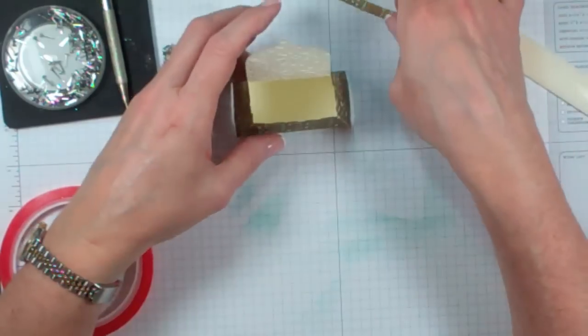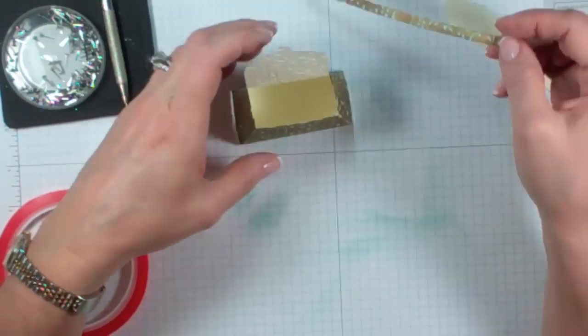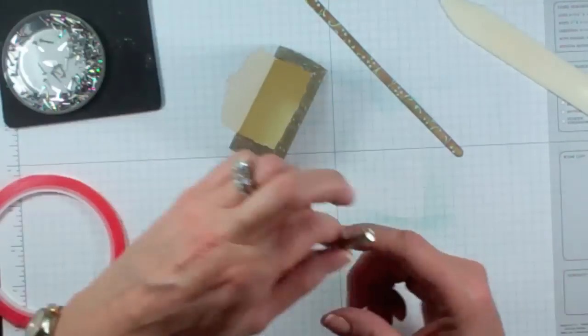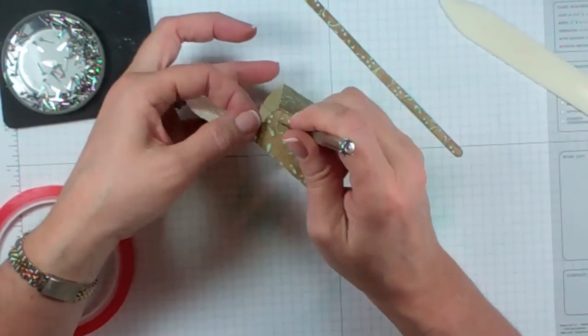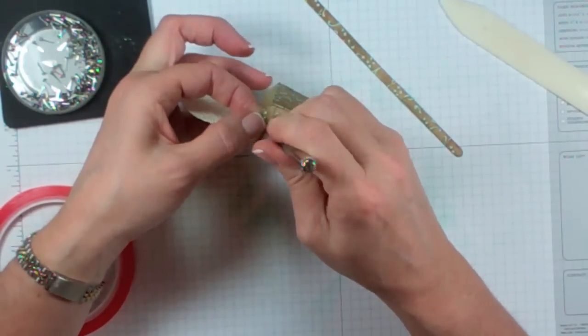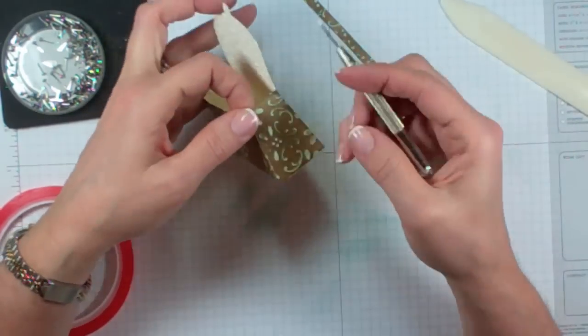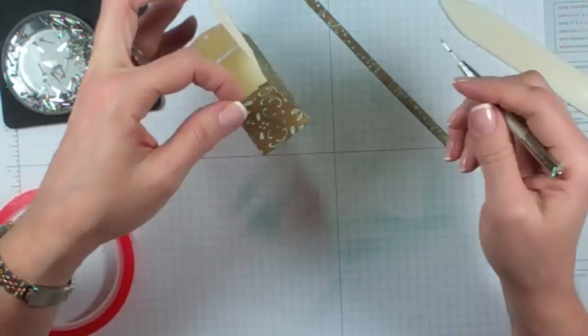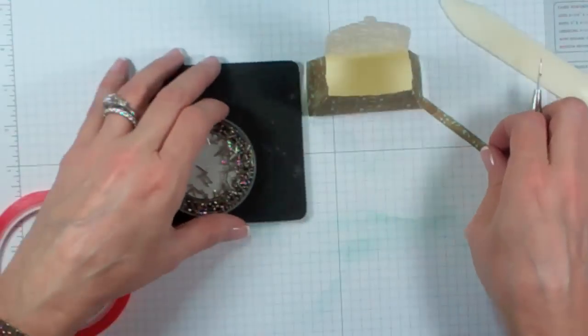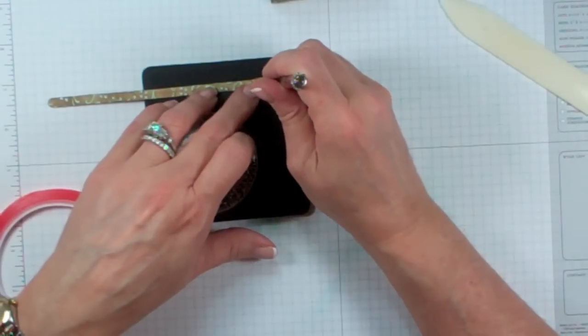The last thing we're going to do is we are going to put the handle on. This actually would have been easier if I had done the handle before I assembled it. So you guys should do that. I'm going to press down with my paper piercer here and here. And again, you definitely want to do this on your mat so that you're not making a hole in your finger. And then I'm going to make a hole in the actual handle.